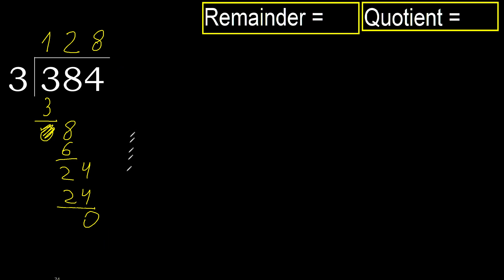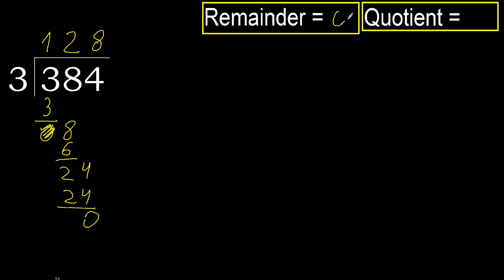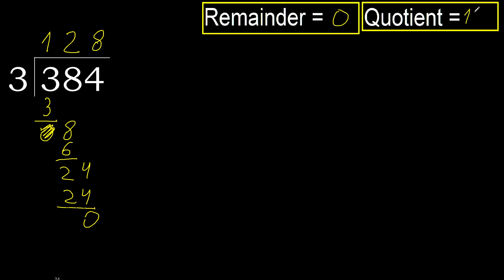There is no next number, therefore finish it. Subtract — ok. 384 divided by 3 is 128. Ok.